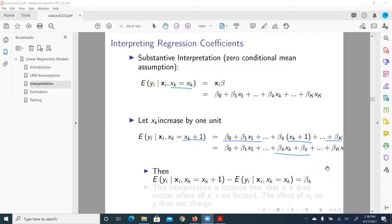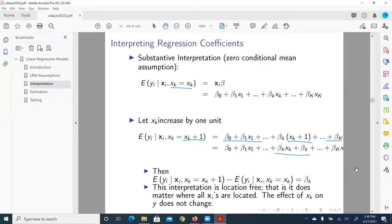What we can do next is to take a difference between the first expected value and the second expected value. That is, we're going to subtract expected value of y given x_k equal to x_k from expected value of y_i given x_k equal to x_k plus one. That is, increase one unit. And what we'll get? Well, if you subtract these two equations, the only thing that is different here in the second equation is we have this additional term, beta_k.